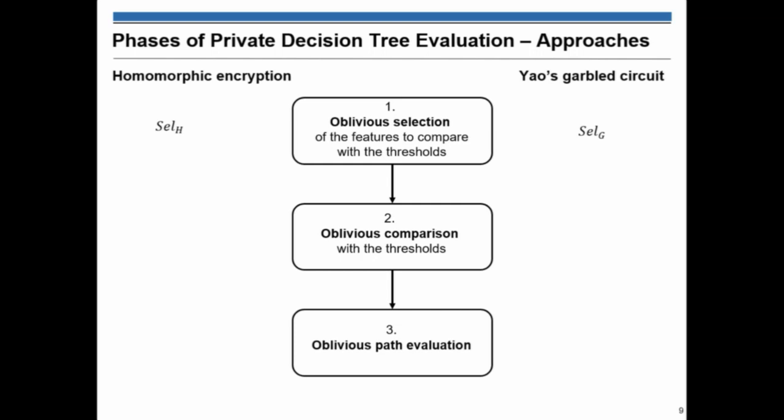For these phases, we can instantiate protocols based on garbled circuit or homomorphic encryption. For the selection, we can use a selection based on homomorphic encryption or garbled circuit. But for comparing homomorphic encryption way, we have the selection just encapsulated inside the compare phase.